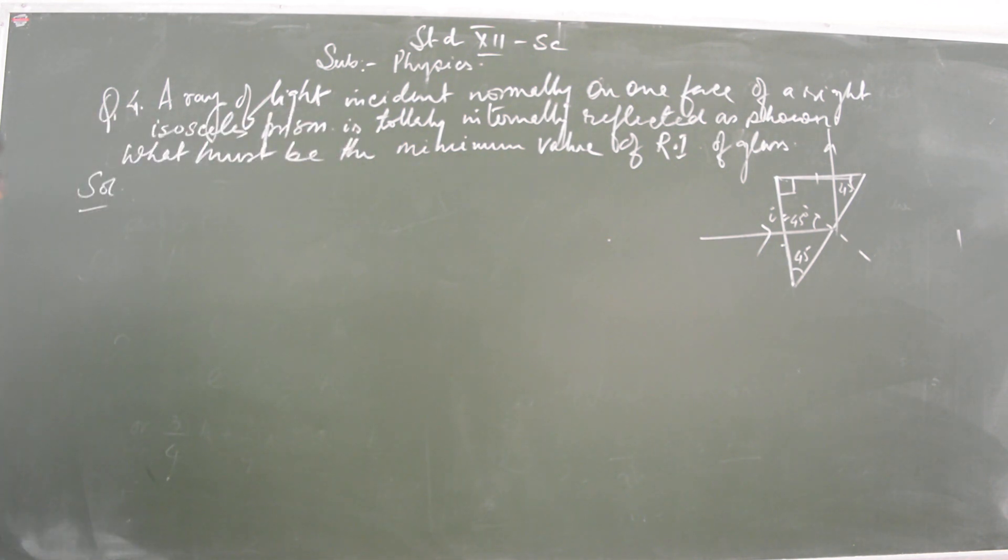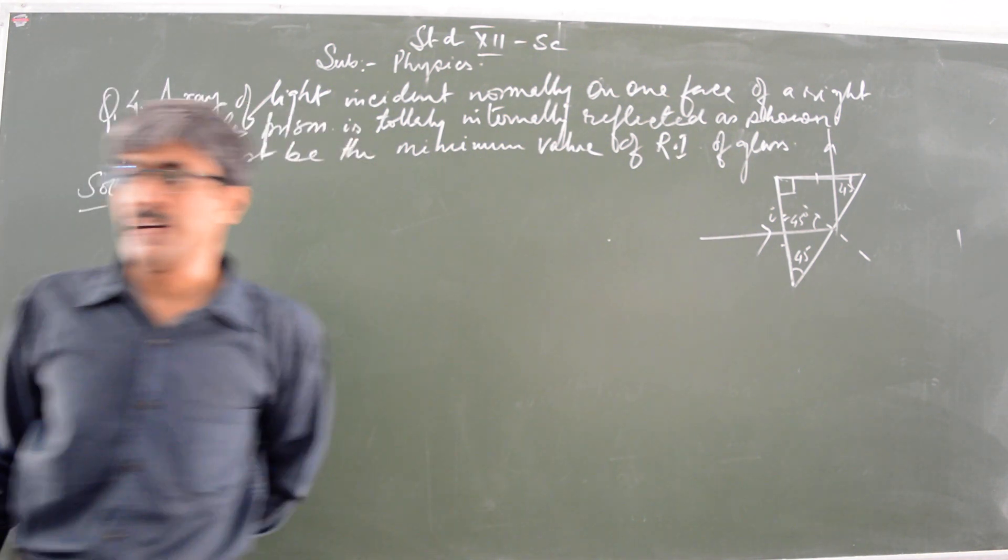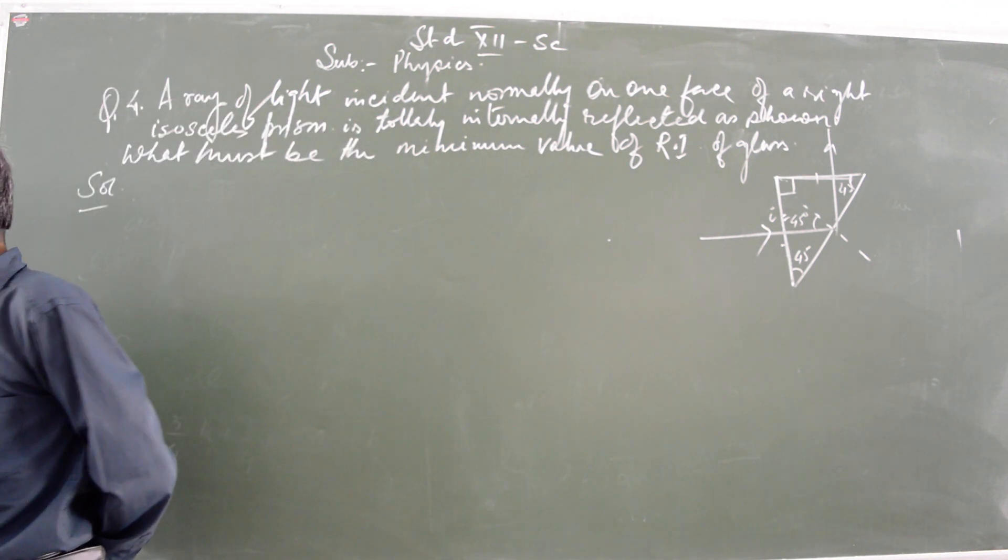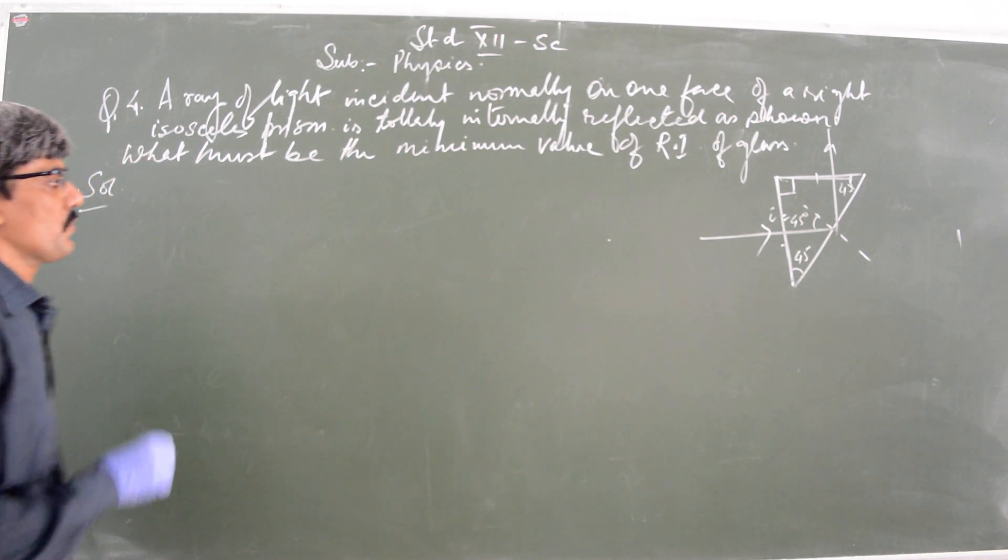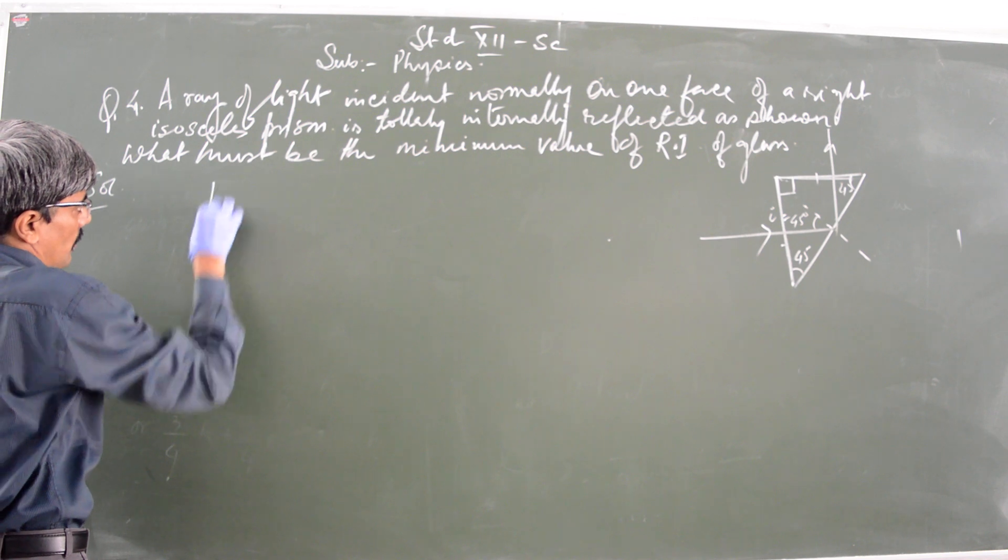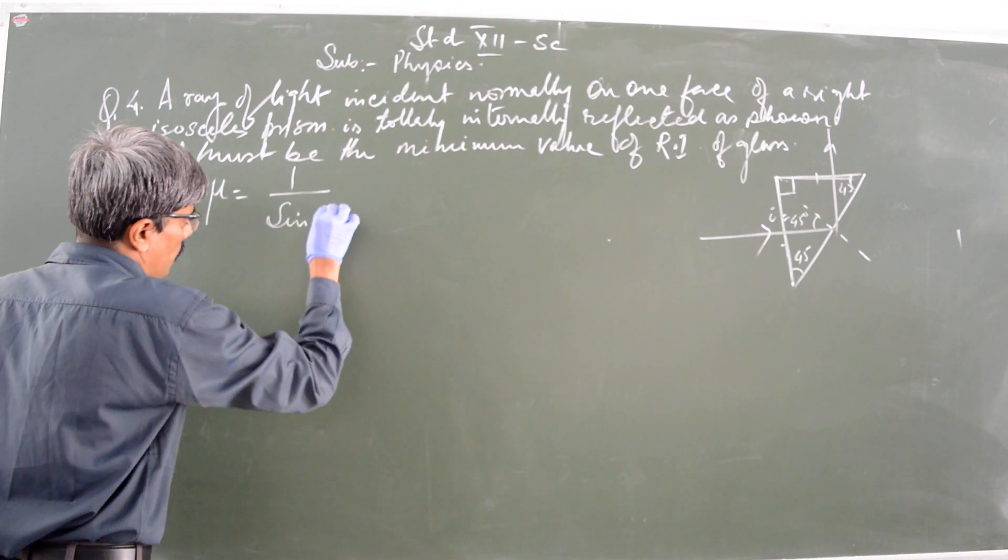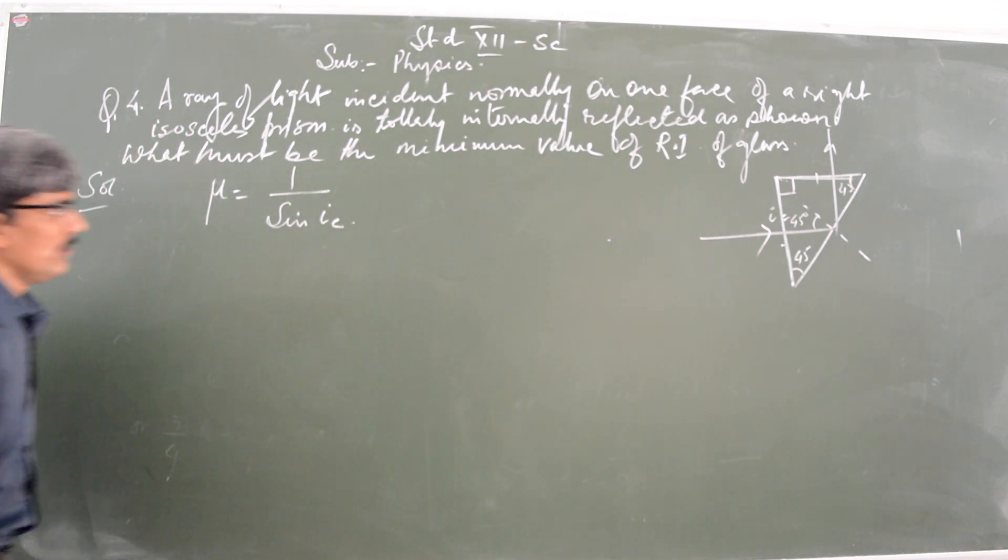Now the question is: what must be the minimum value of refractive index? Remember, the minimum value of refractive index is a must. The key formula for this question is refractive index is the reciprocal of the sine of the critical angle IC.